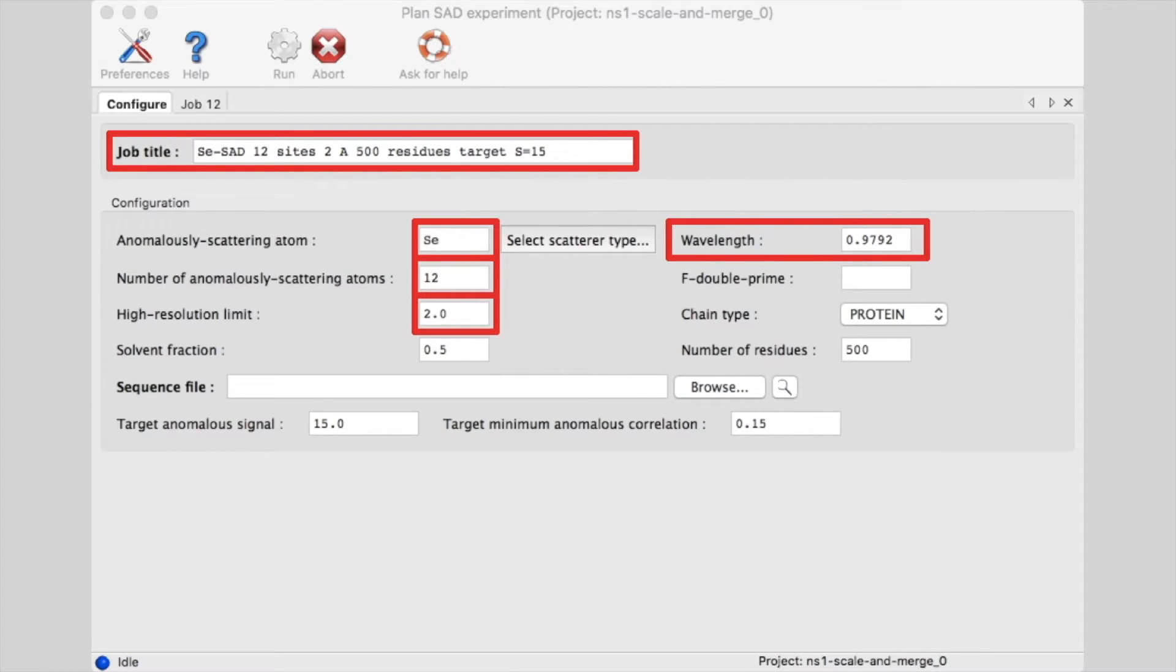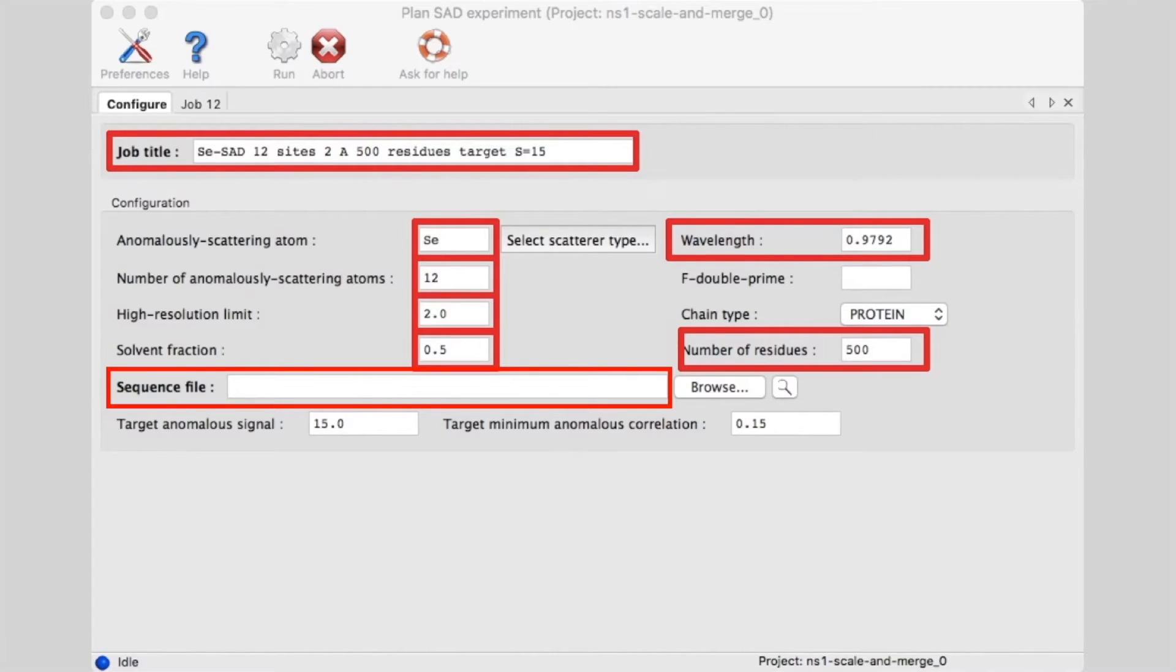Let's assume as a rather typical case that we have 12 sites, a high resolution limit of 2 angstroms, a solvent fraction of about 0.5, and 500 residues. You could enter a sequence file if you wanted to instead of specifying the number of residues.